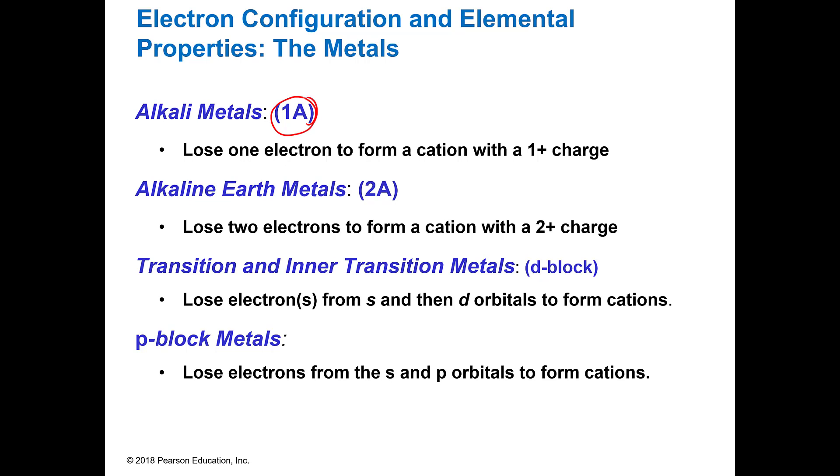Group 1A which is on the far left of your periodic table are called the alkali metals. The alkali metals are going to have one valence electron which means that they are going to lose one electron and form a plus one charge. So if you look, you could write plus one above the 1A.